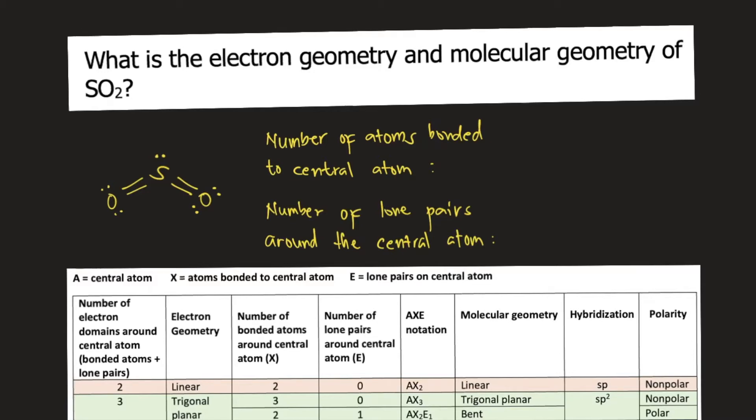What is the electron geometry and molecular geometry of SO2 or sulfur dioxide? I have drawn on the board the Lewis structure of SO2, and it is very obvious from the Lewis structure that the central atom in the molecule is sulfur.